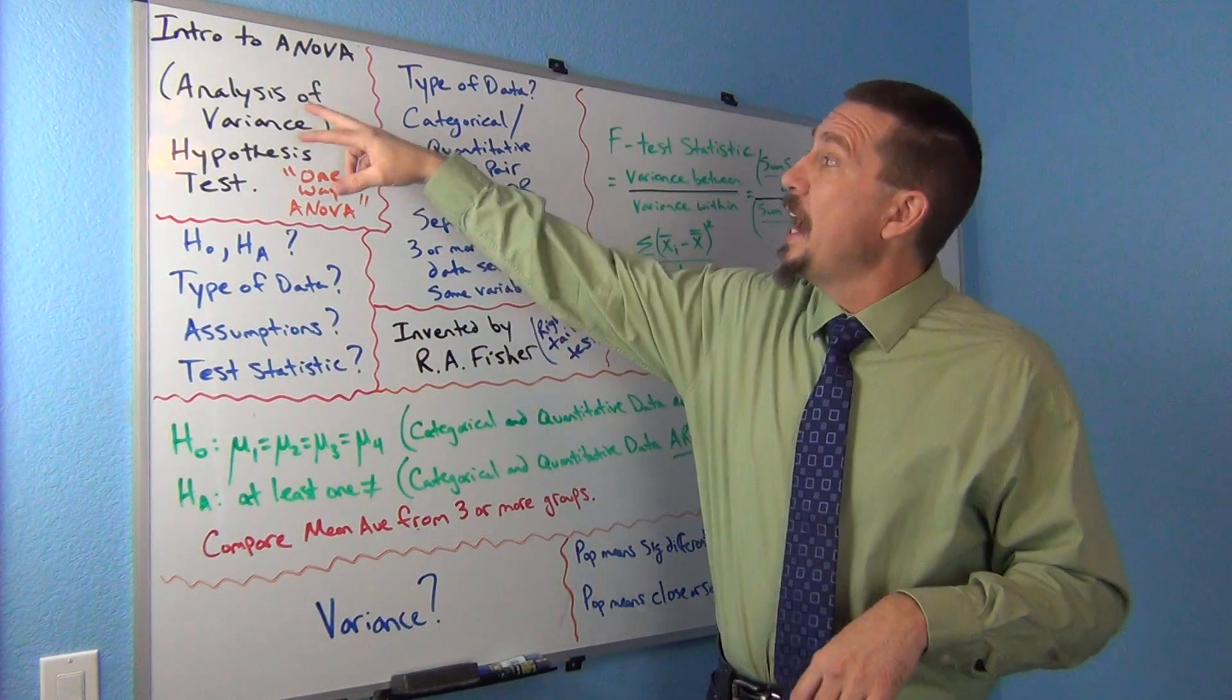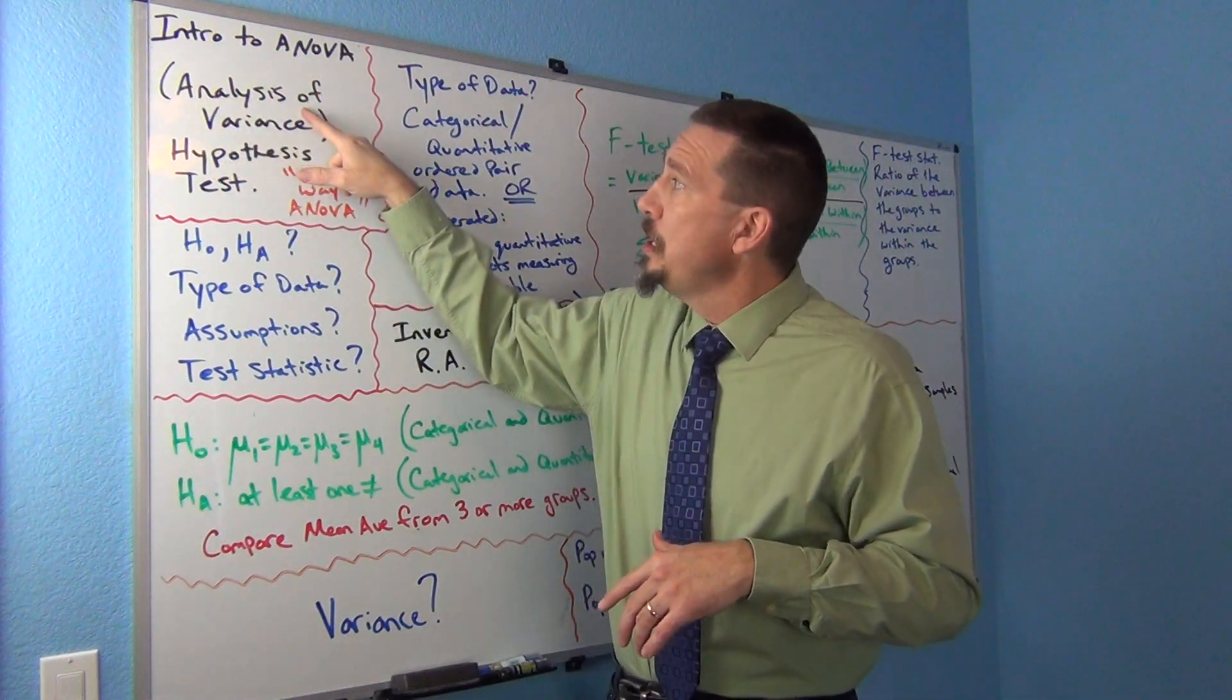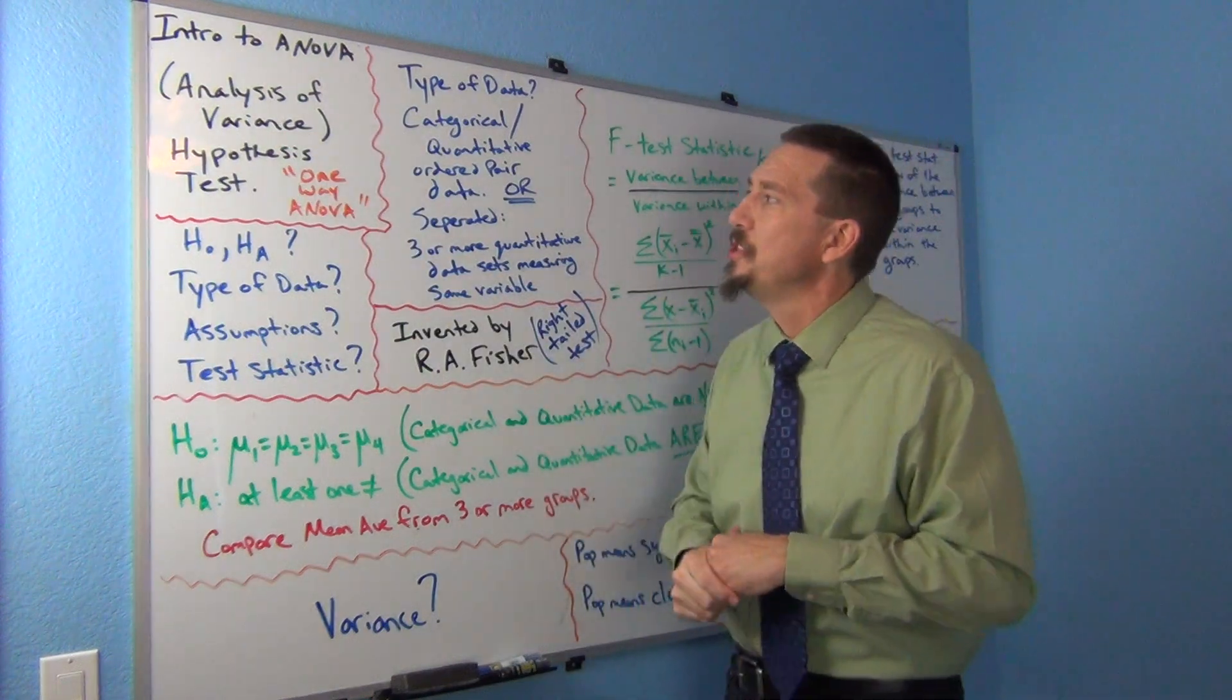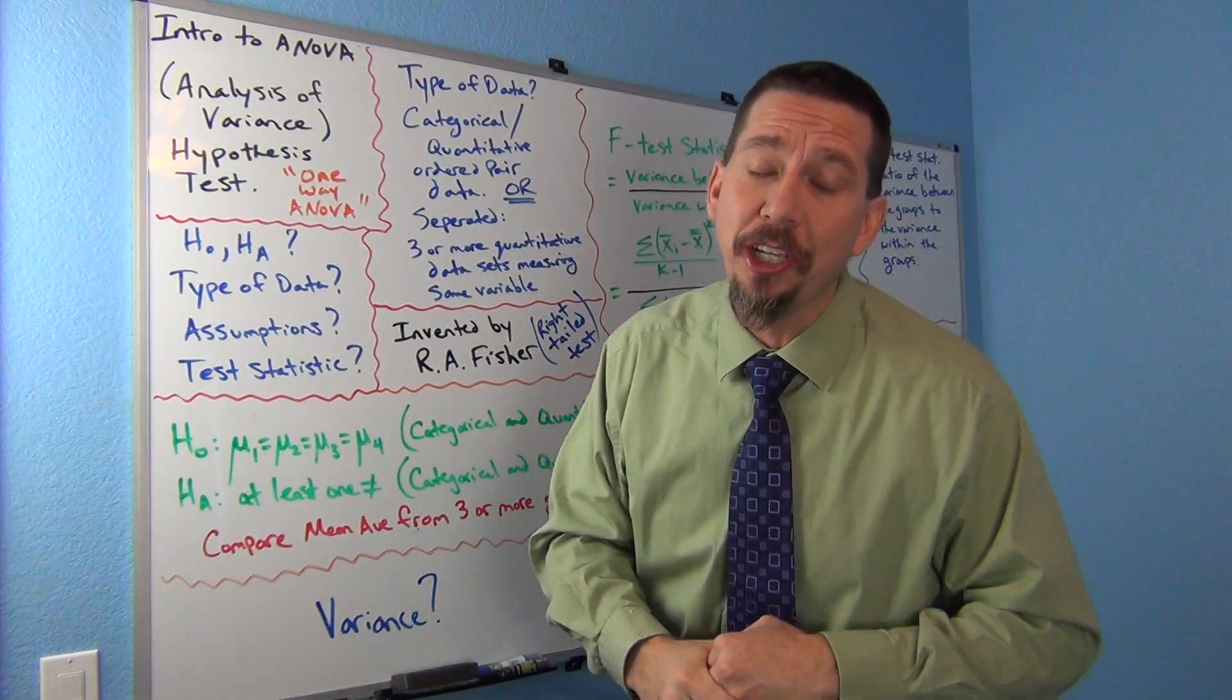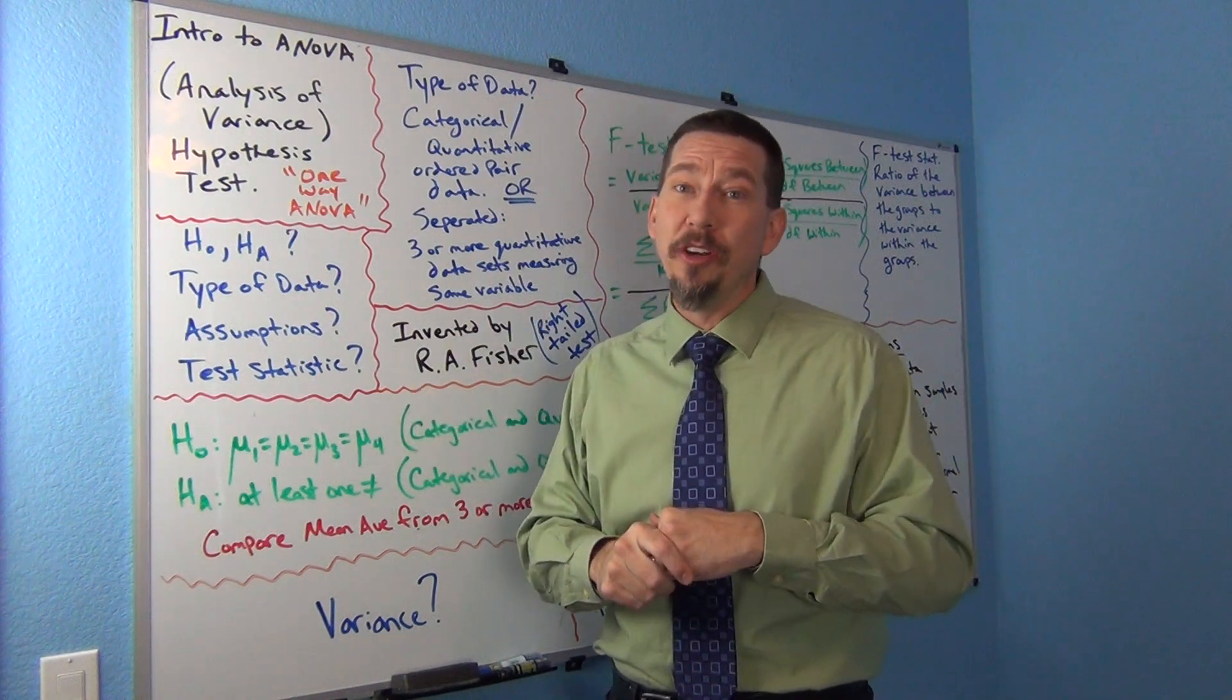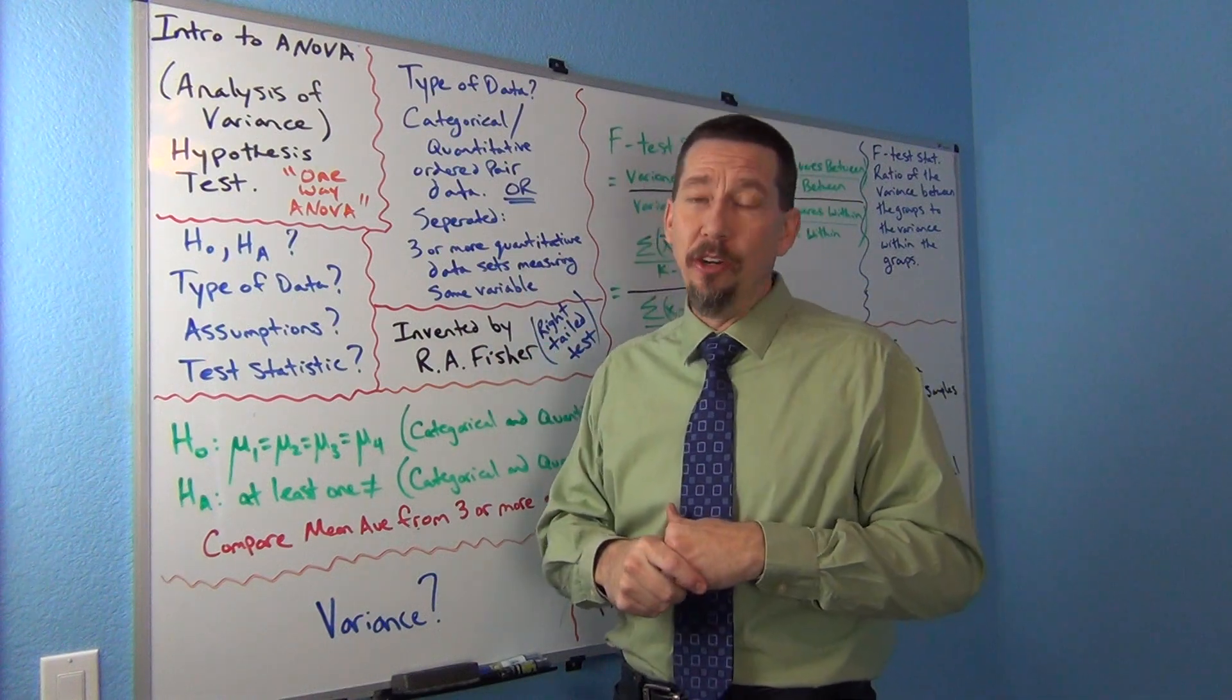Now ANOVA stands for Analysis of Variance, A-N-O, and then V-A, Variance, is ANOVA. So it's referred to as ANOVA. We're just going to actually be looking at the one-way ANOVA. There is a two-way ANOVA that's more advanced, but for intro stats usually we just get into the one-way ANOVA.